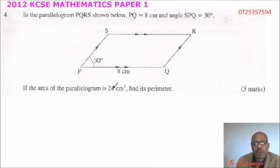So here what we do is, for us to get the perimeter, we need the length PS so that we add with PQ and we multiply by 2.